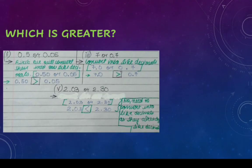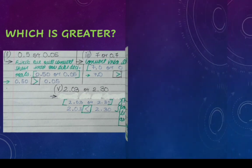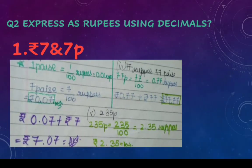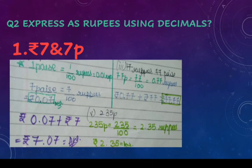Now we are going to see the question which asks us to express rupees using decimals. The first part is rupees 7 and 7 paise. Since 1 paisa equals 1/100 rupees, which is 0.01 rupees, therefore 7 paise equals 7/100 rupees, which equals 0.07 rupees.